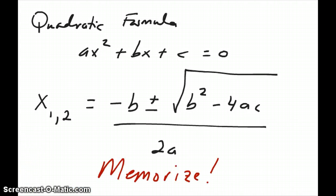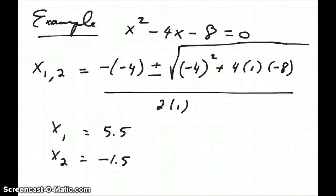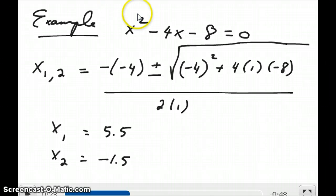This needs to be memorized for this class because there will be quite a few times when it would be convenient if you remember this formula to solve the quadratic equation in front of you. Let's do a quick example here. So let's say you set up your equation in an equilibrium type problem and it ends up being x squared minus 4x minus 8 equals zero. So in order to use the quadratic equation, then you'll just say x12 is equal to minus b, b in this case is minus 4,